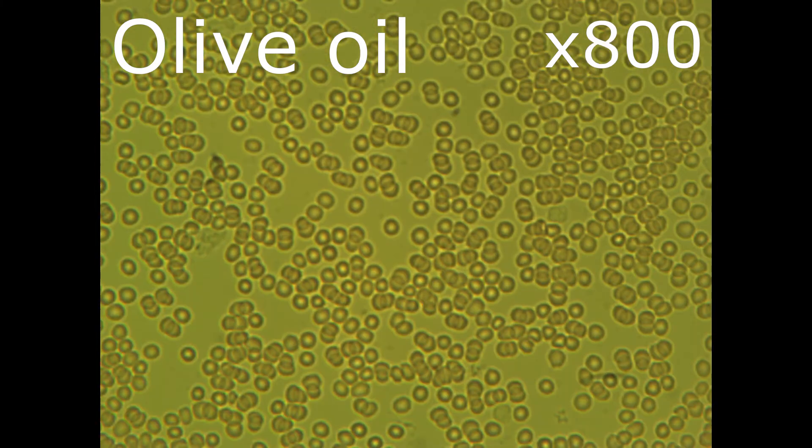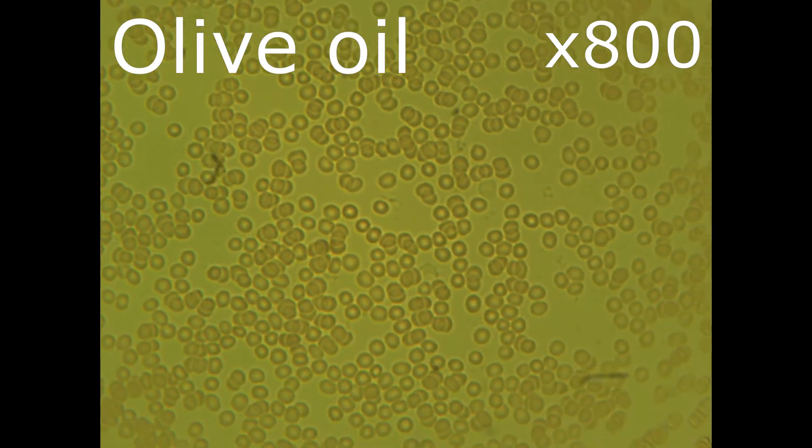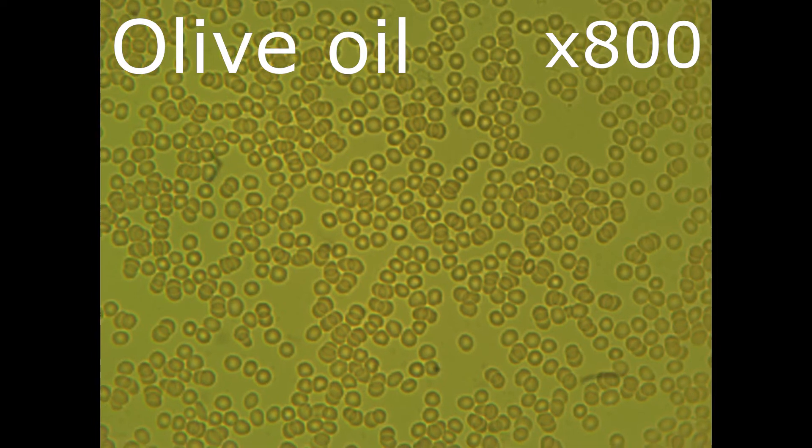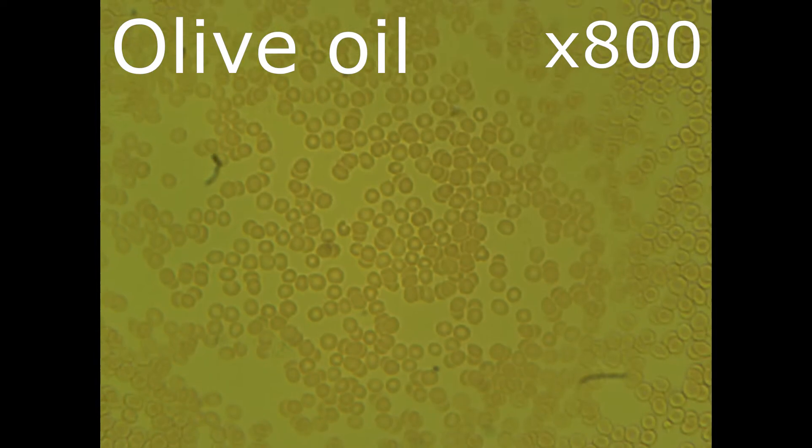Let's have a closer look, zooming to 800x. It looks similar to the blood before taking the olive oil. The small chains of glued erythrocytes are still there and they started to glue to each other, forming islands.